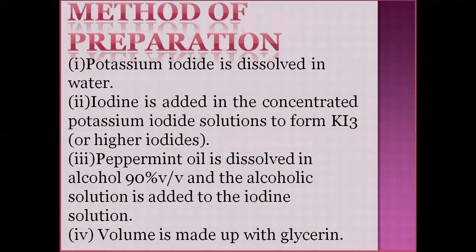Method: Potassium iodide is dissolved. Concentrated potassium iodide solution is called Lugol's or aqueous iodine. Then peppermint oil is dissolved in alcohol which will be 90%. The alcoholic solution is another food-activated solution. All the species characteristics will be dissolved in alcohol — 90% of the alcohol is dissolved in alcohol. Alcoholic solution is another iodine solution.